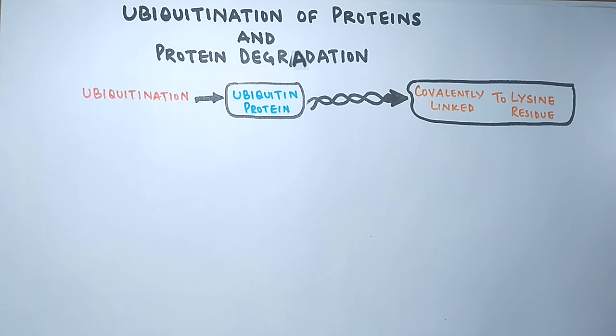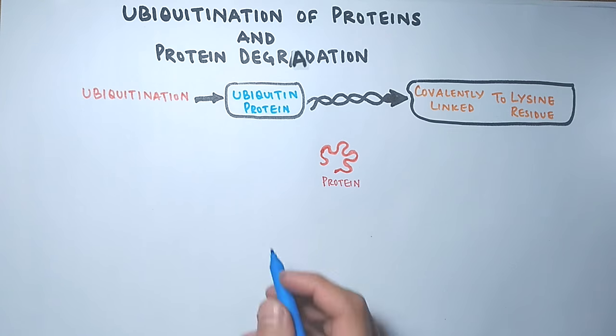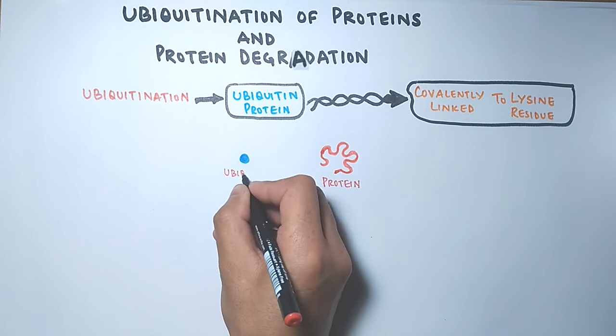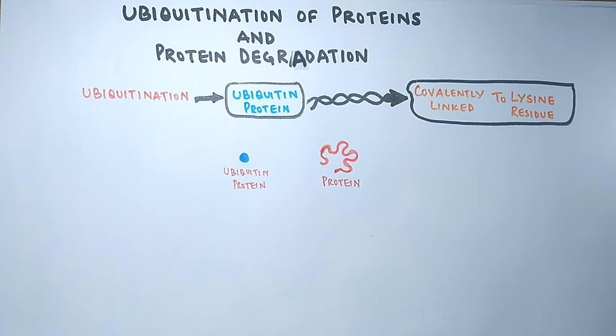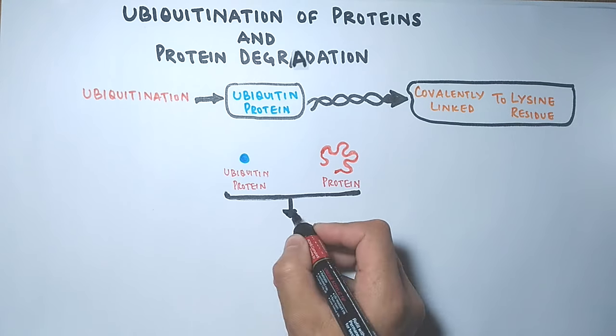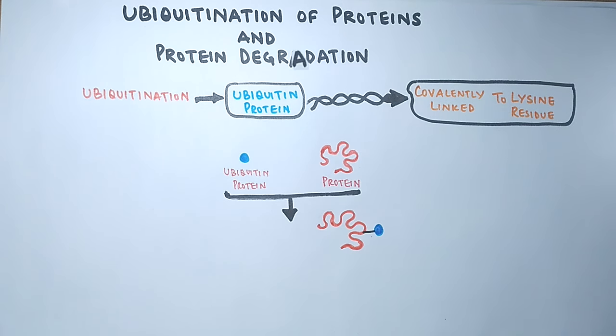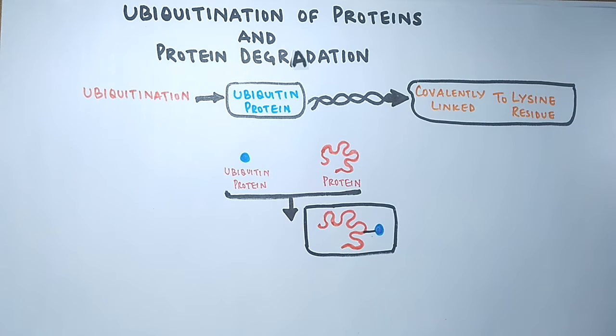If we see it diagrammatically, we have a target protein as shown in the figure, and on the left we have a ubiquitin protein shown as a blue dot. In this process of linking ubiquitin with protein, which is initiated by enzymes, we get the ubiquitin attached to it in this manner. It must be noted here the bond between lysine residue and the ubiquitin is the isopeptide bond.